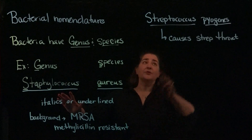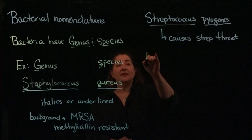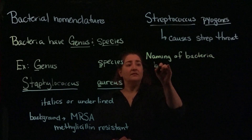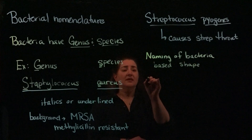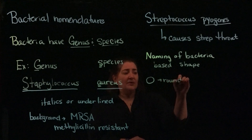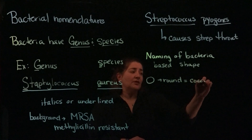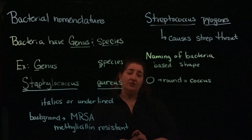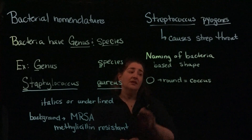If you notice, both of these genus names end in 'coccus.' A little bit of the naming of bacteria can be based on the shape of the bacteria. For a bacteria to be 'coccus,' the bacteria, when visualized underneath a microscope, will look round. So if you see 'coccus' in the name, it tells you it's a round-looking bacteria. Both Streptococcus pyogenes and Staphylococcus aureus are round bacteria.